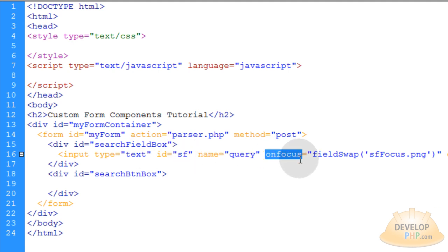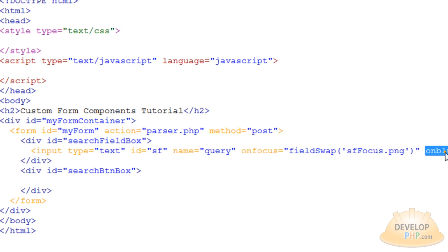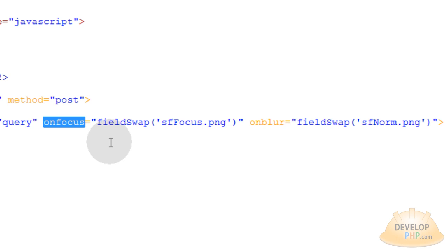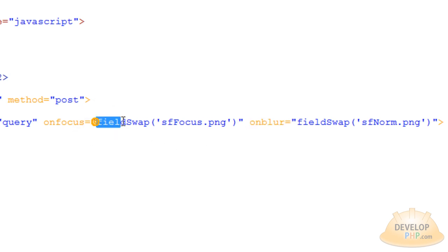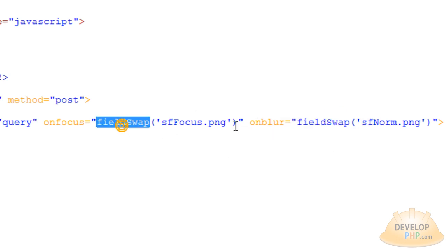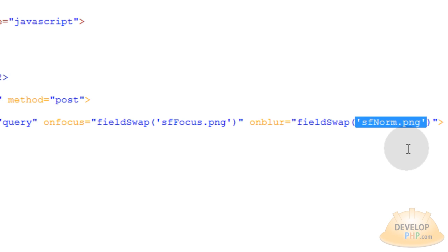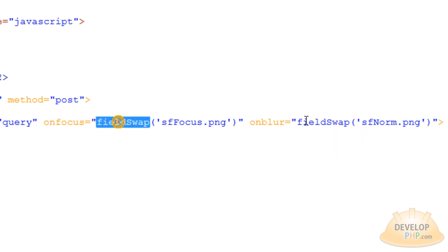Now we have two very important event attributes for this element: onFocus and onBlur. onFocus is when the user goes and interacts with the element — when they put their mouse in that field to put the cursor in place and start typing. The onBlur event is when I take my mouse and put it outside of the field and interact with something else on the page, so I'm no longer interacting with that field. Within both of those events we fire off a JavaScript function called FieldSwap. FieldSwap gets one argument sent to it — the image that we want to swap the field background for on each occasion.